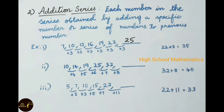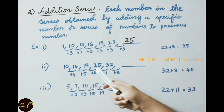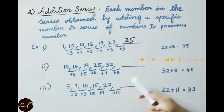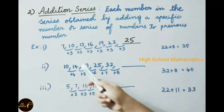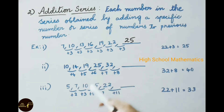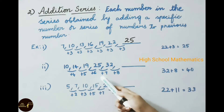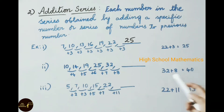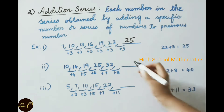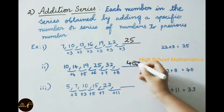Another example: 10, 14, 19, 25, 32 — find the next term. Here: 10 plus 4 is 14, 14 plus 5 is 19, 19 plus 6 is 25, 25 plus 7 is 32. Observe the pattern: plus 4, plus 5, plus 6, plus 7. So the next term will use plus 8, giving 32 plus 8 equals 40.